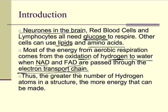What goes into the electron transport chain is hydrogen. So the more hydrogen you have in a substrate, the more energy that can be made. If you feed something into respiration that has more hydrogens, you're going to reduce more NAD, which feeds more hydrogens into the electron transport chain and therefore produces more ATP.